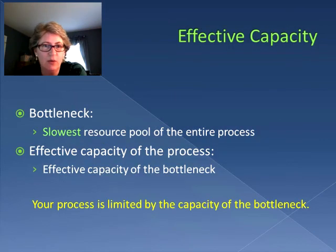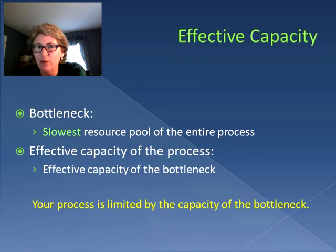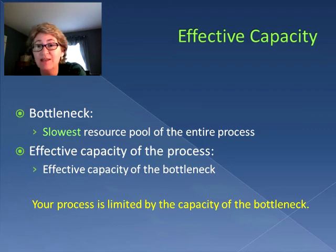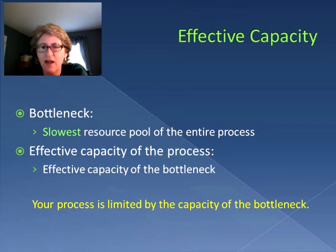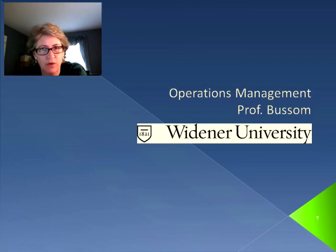That was an example with just a single resource pool. But in most cases, we have multiple resource pools for a particular process. So what we have to deal with is something called the bottleneck. The bottleneck is the slowest resource pool of the entire process, and that drives the effective capacity of the process. Next time we're going to take effective capacity and do a step-by-step example using more than one resource pool.